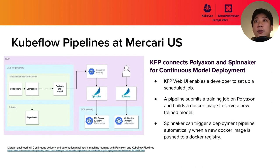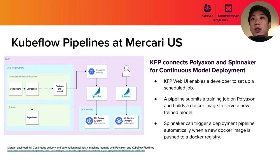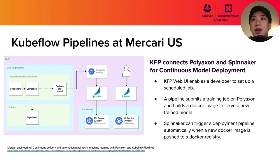Kubeflow Pipeline automates manual operations regarding the model exploration phase and deploying the ML model to production. In one example workflow, the first step submits a PolyAxon job to run the training job. The next step submits to PolyAxon to get a trained model. The third step submits a PolyAxon job for model evaluation. If the metrics look good, Kubeflow Pipeline creates a Docker image to serve the new trained model, pushes it to the Docker registry, and then Spinnaker detects the new Docker image and deploys to production.